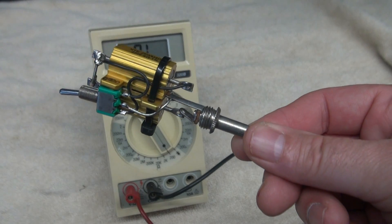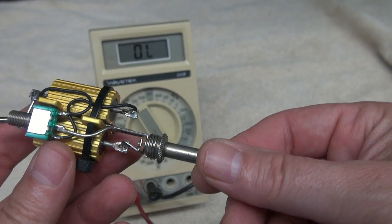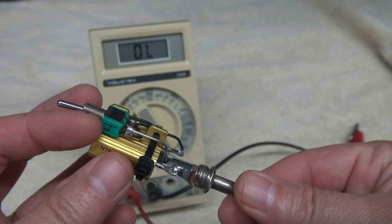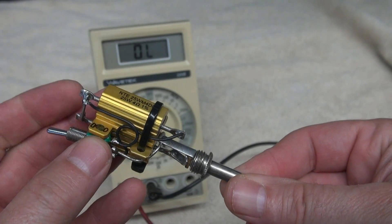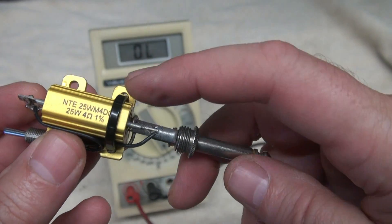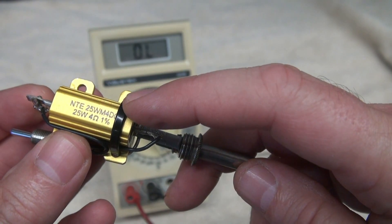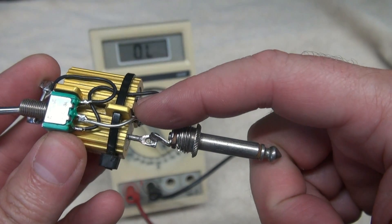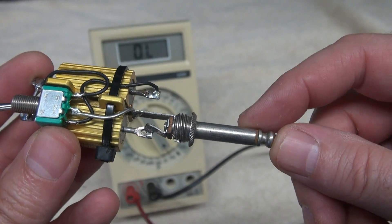So here it is, the little standalone audio dummy load, switchable for four or eight ohms at 25 watts. The heart of it is two of these 25 watt four ohm resistors, and they're actually mounted right on the ground lug of the quarter inch Switchcraft jack.